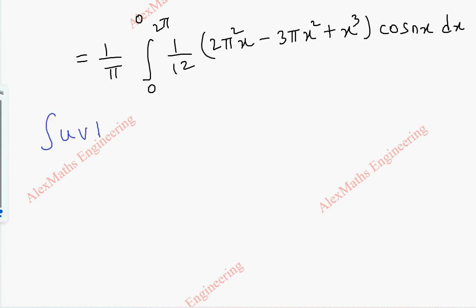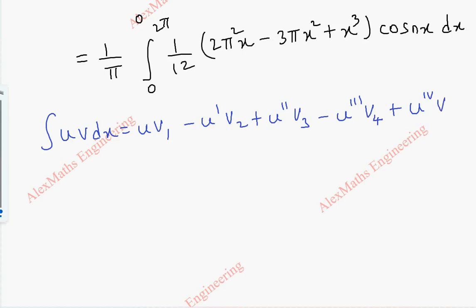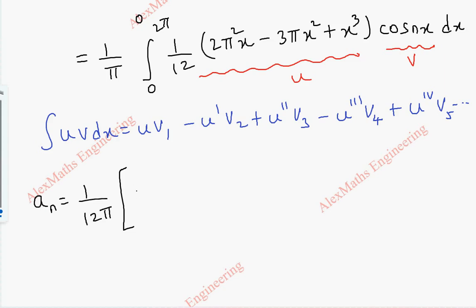By Bernoulli's formula, ∫uv dx = u·v₁ - u'·v₂ + u''·v₃ - u'''·v₄ + ... Taking 1/12π as a constant outside, u = (2π²x - 3πx² + x³) and v₁ = sin(nx)/n (the integration of cos(nx)).